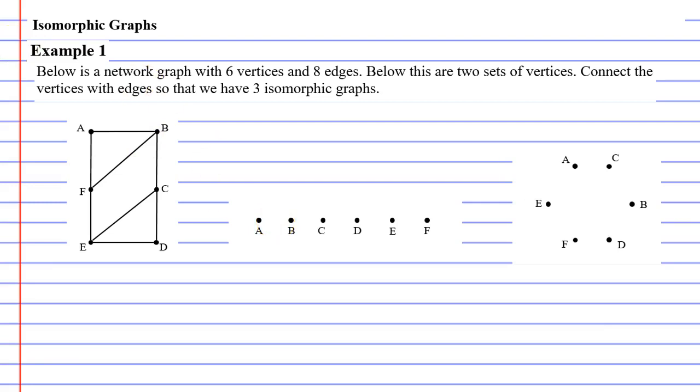You will notice when we look at the graph on the left, you've got vertex A connected with B and it's also connected with F. So we're going to make sure that happens in our diagrams on the right. We want A to connect with B and we want A to connect with F on both graphs.